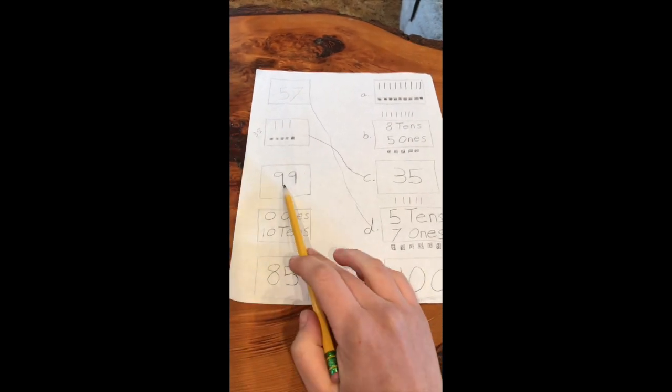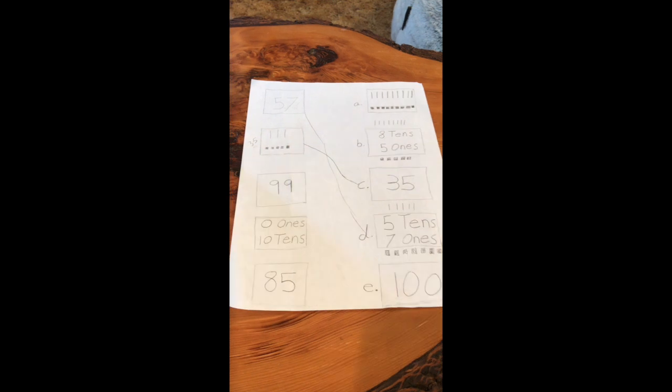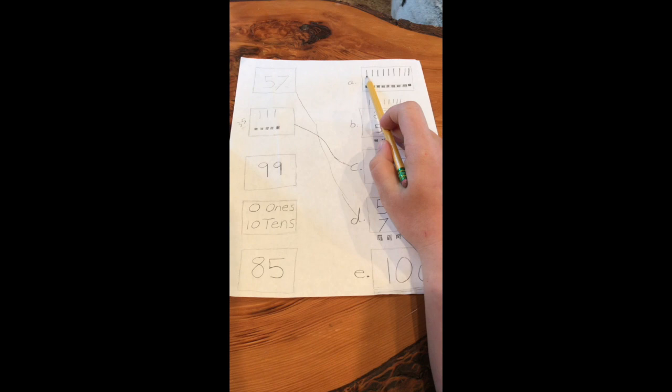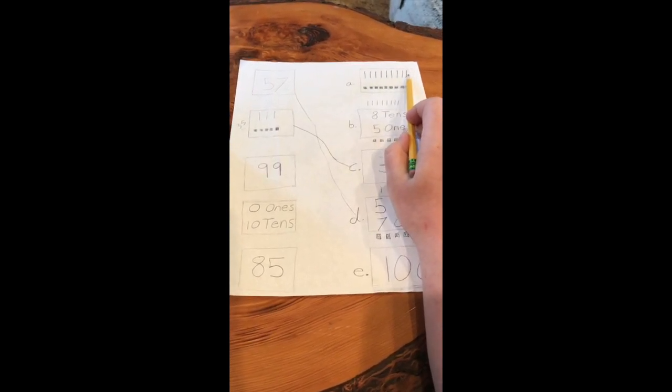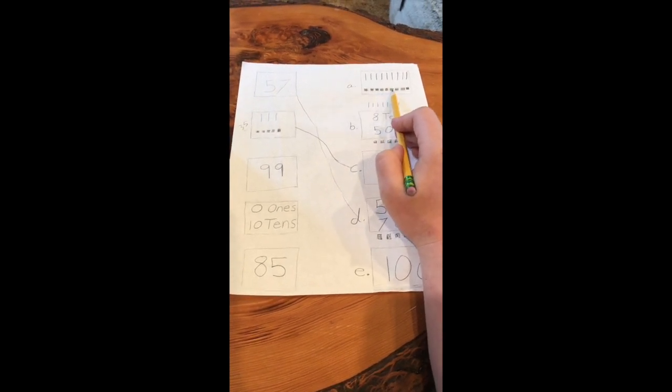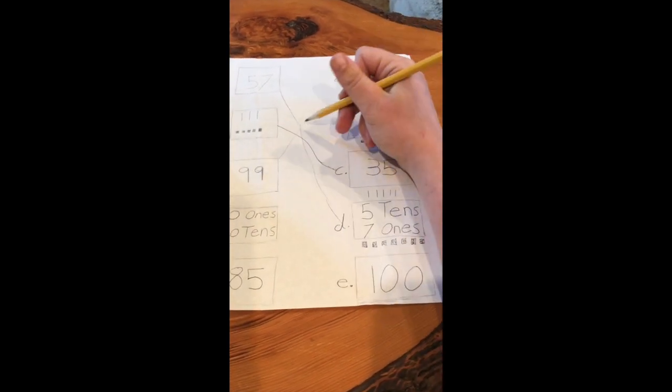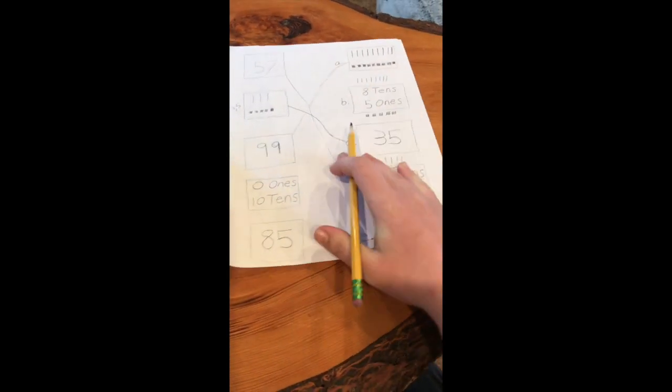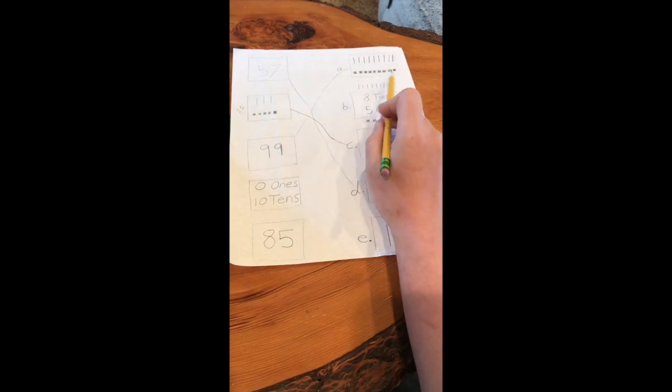Our third number, 99. Now, many friends, I think you already know it, but we're going to just check. Let's count. Ready? 10, 20, 30, 40, 50, 60, 70, 80, 90, 91, 92, 93, 94, 95, 96, 97, 98, 99. Nice job remembering that was 99. You can tell that it was 99 because there are nine tens and nine ones.